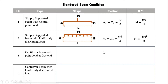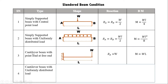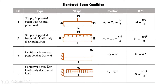For a cantilever beam with a point load at the free end, the reaction is W and the maximum bending moment at the fixed end is W×L. For a cantilever beam with a uniformly distributed load, the reaction is W×L and the maximum bending moment is WL²/2. These standard beam conditions are prerequisites for calculating bending stress and shear stress.